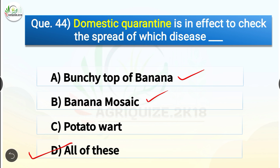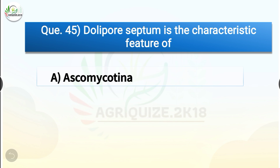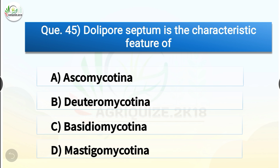Question number forty-five: Dolipore septum is the characteristic feature of the options are Ascomycotina, Deuteromycotina, Basidiomycotina, or Mastigomycotina. The correct answer is option C, Basidiomycotina. Dolipore septum is the characteristic feature of Basidiomycotina. Dolipore septa are specialized dividing walls between cells found in almost all species of fungi in the phylum Basidiomycotina.